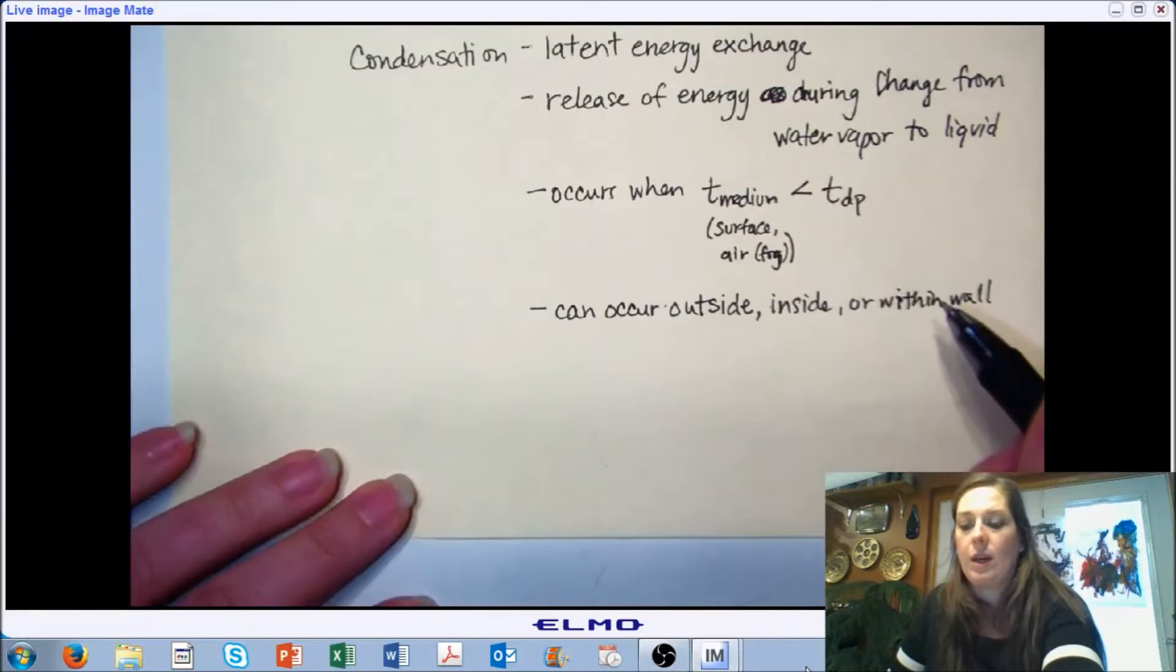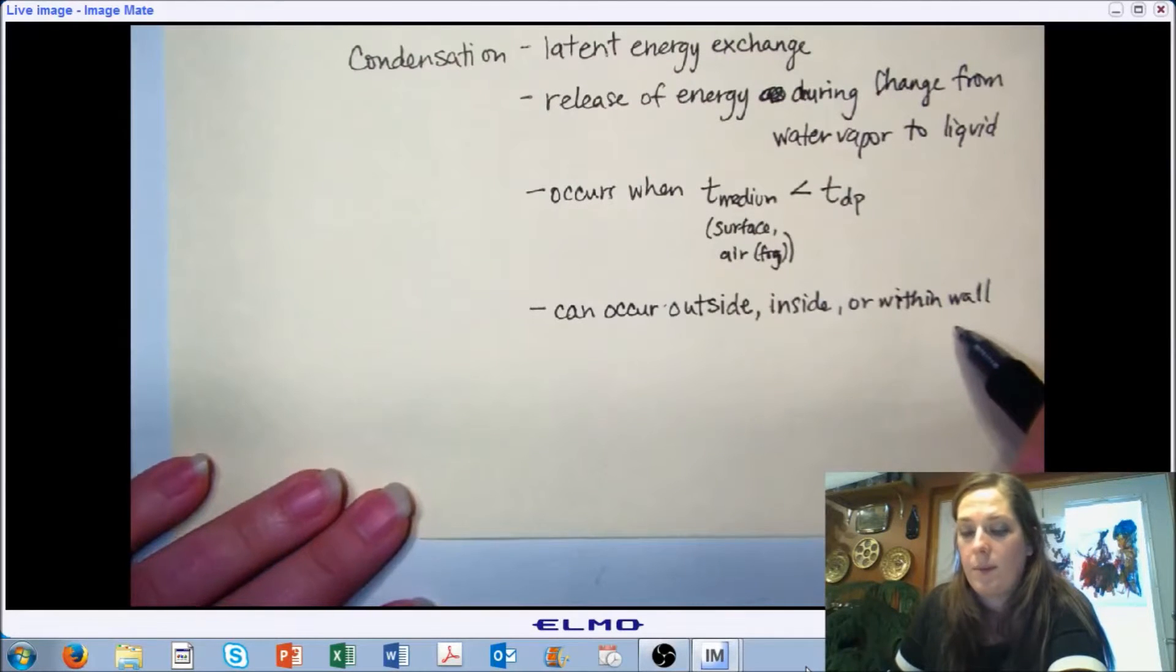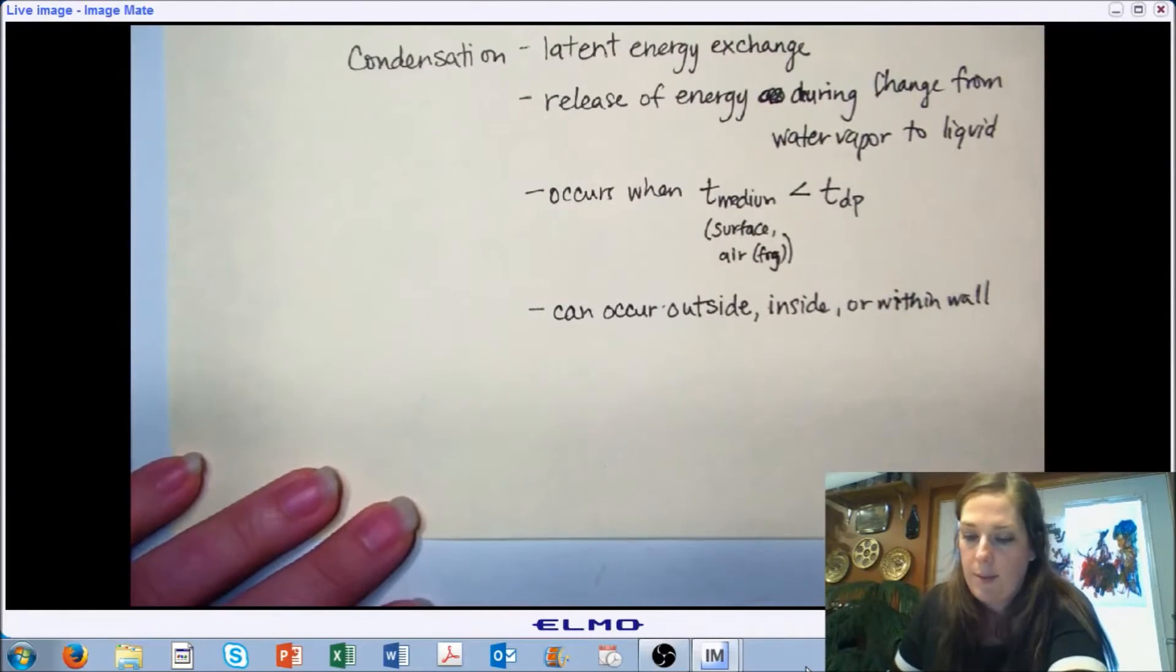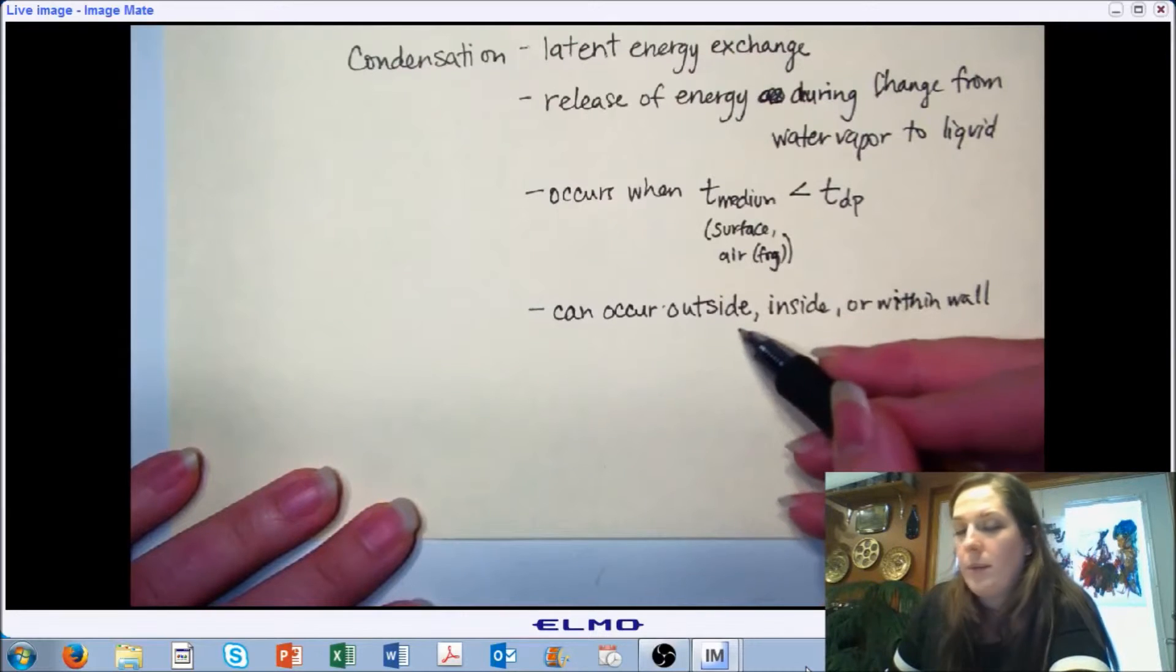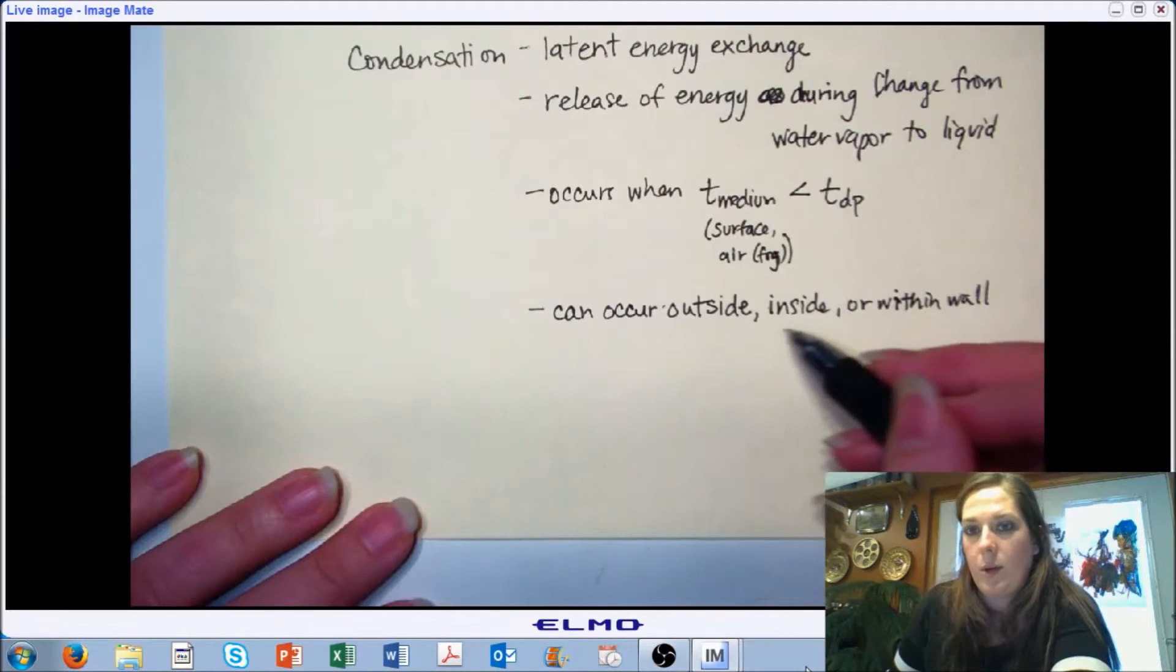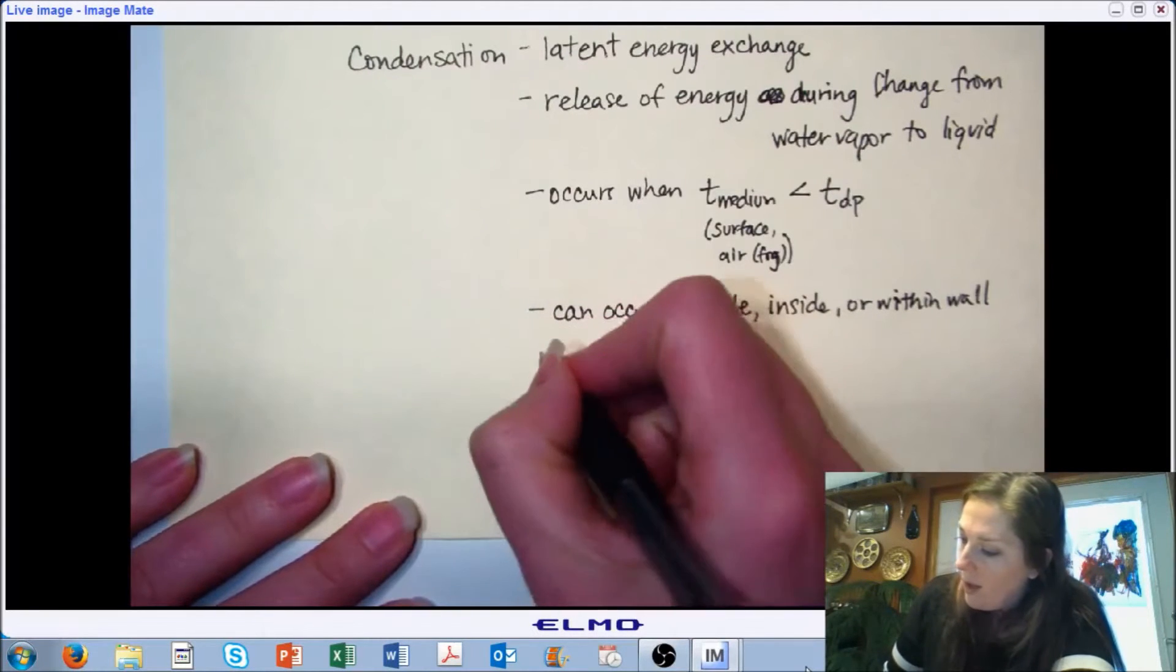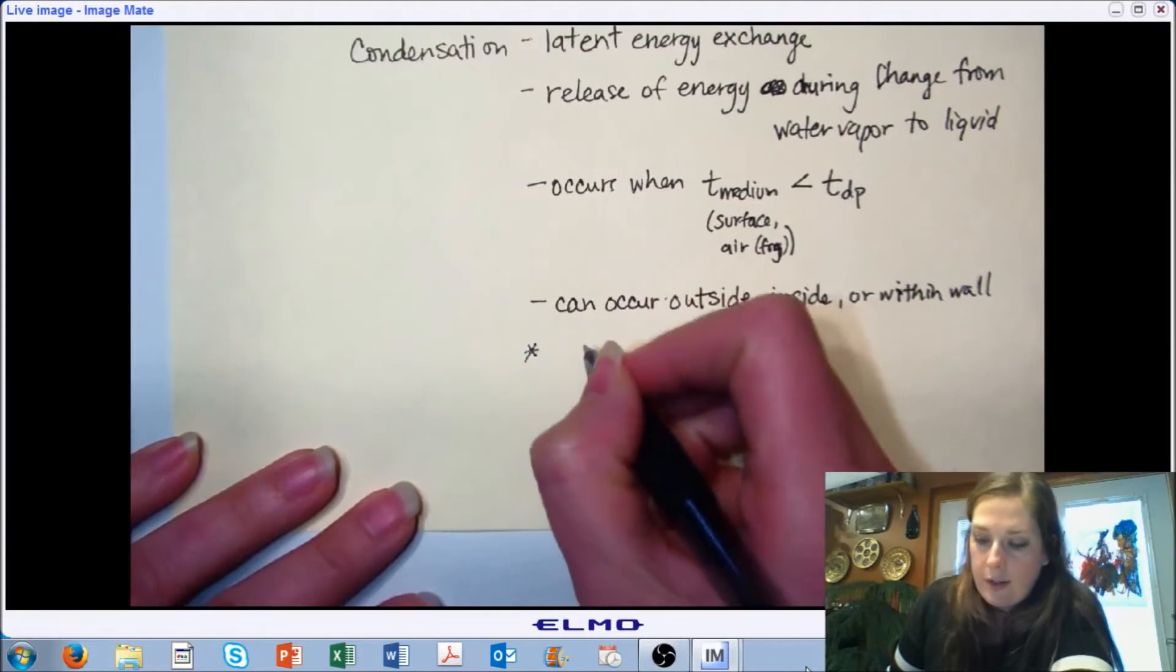This can lead to significant problems, especially with our insulation, and we'll get into some examples of that. But you might be okay with condensation outside your wall. You might not. You typically don't want condensation inside a wall because it's happening inside your facility, inside the environment you want to control. And we definitely don't want it within a wall.